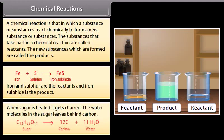Iron plus sulfur gives iron sulfide. Iron and sulfur are the reactants and iron sulfide is the product. When sugar is heated, it gets charred. The water molecules in the sugar leave behind carbon.